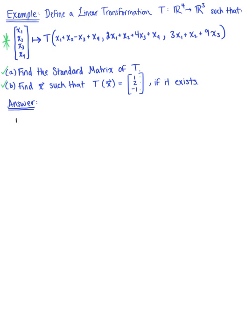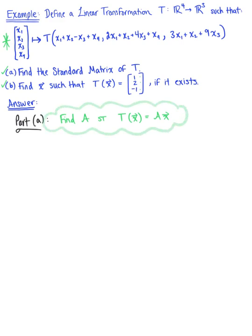So here we go, Part A. We want to find the standard matrix of T. We're looking for matrix A — the standard matrix of T — such that the image of vector x under the action of T is equal to matrix A times vector x. So we need to take this given linear transformation and start by decomposing it.